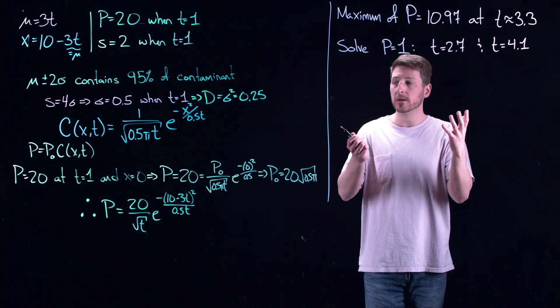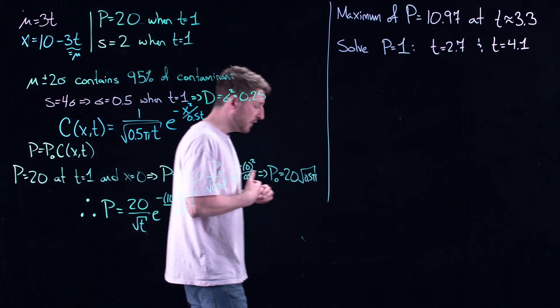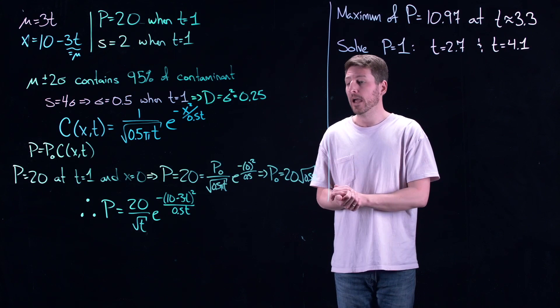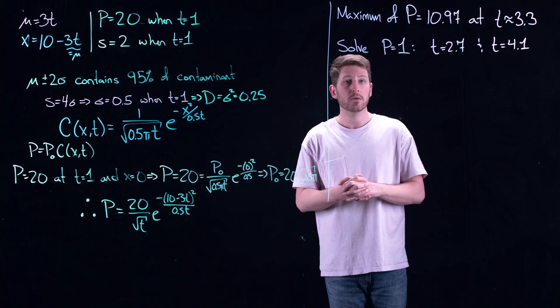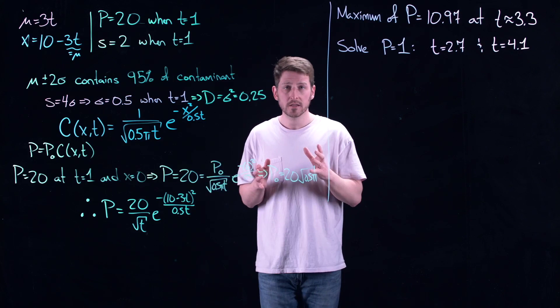So this gives us all the information we need. We made the assumption that pollution particles diffuse according to Brownian motion, which is really just a Gaussian or normal distribution density. Using that, we built a model telling us when to expect pollution spikes and what the maximum spike should be at the town. In the next video, we'll talk about the last unit of this lecture series: Markov chains.